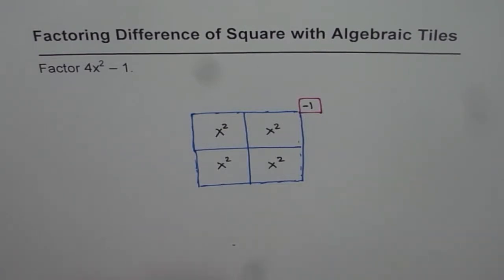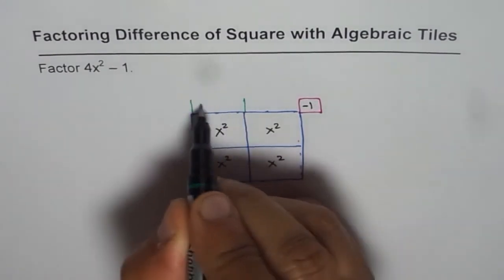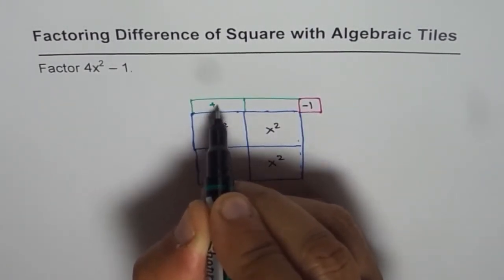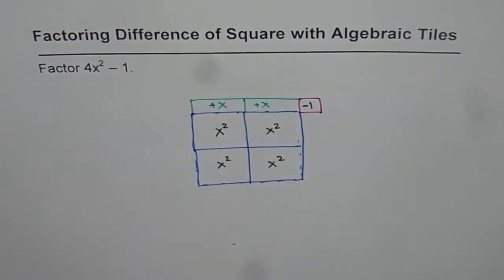So we will add 2x tiles. These are my 2x tiles. Right. So this is plus x and plus x, and we can subtract 2x tiles.